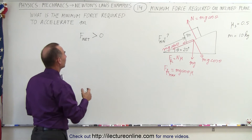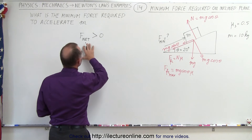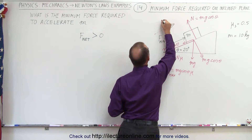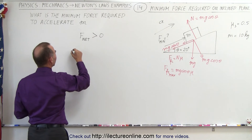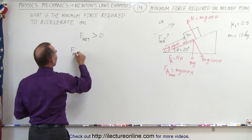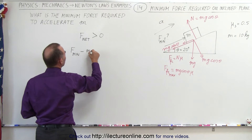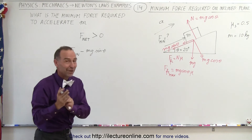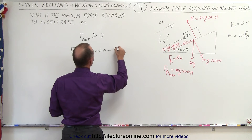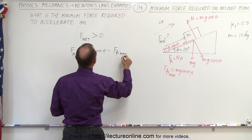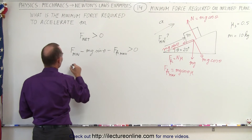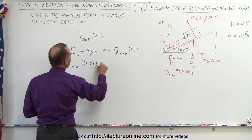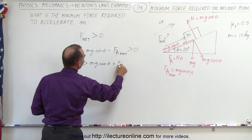The net force equals mass times acceleration. The net force is all the forces in the direction of acceleration, assuming the acceleration will be up the incline. So we can say that this will be the force applied — the minimum force required — minus mg sine theta, the parallel component of the weight, minus the maximum friction force. And you want that to be greater than zero.